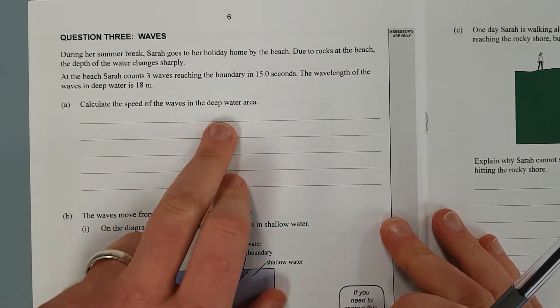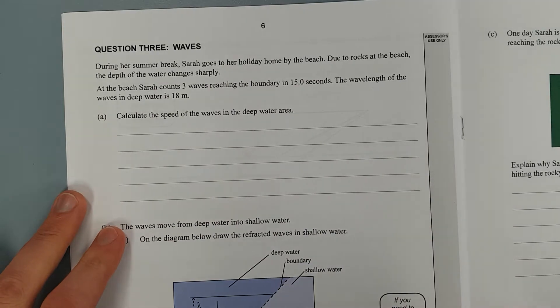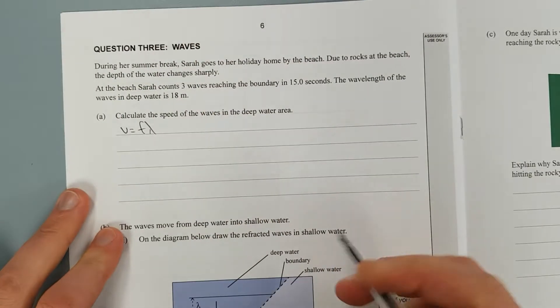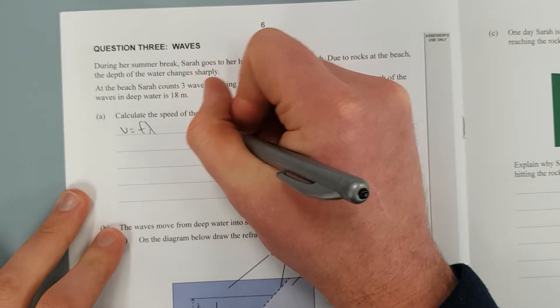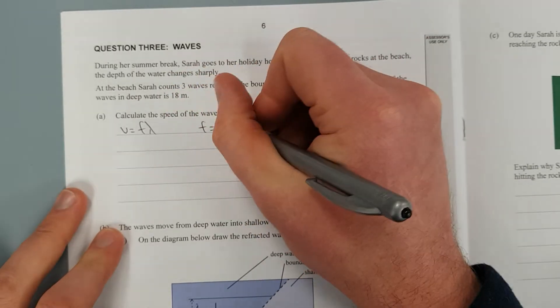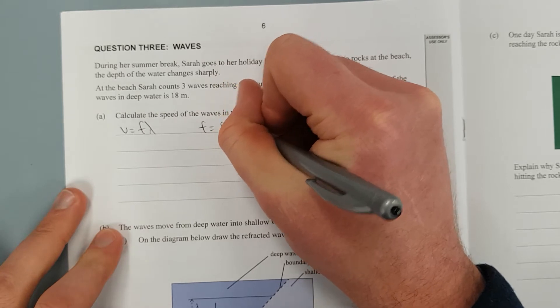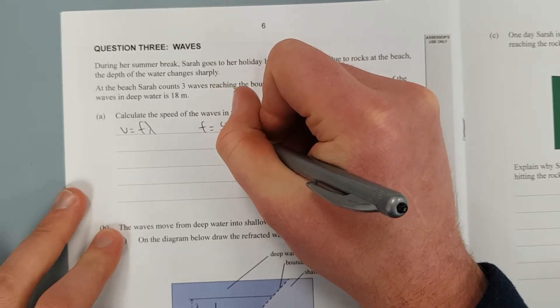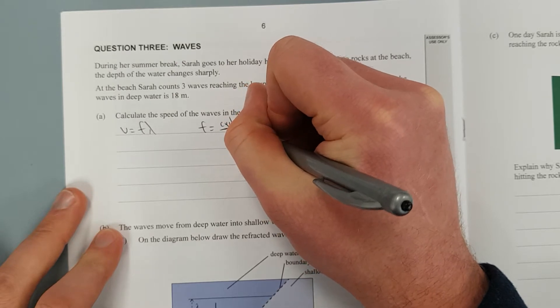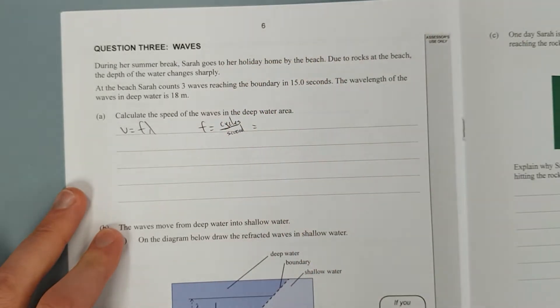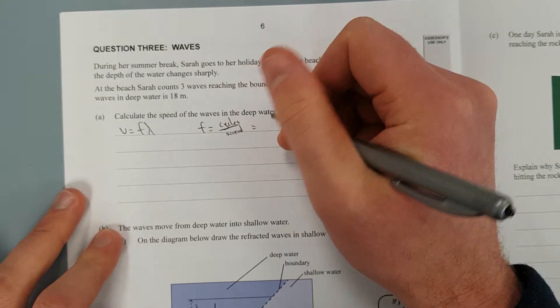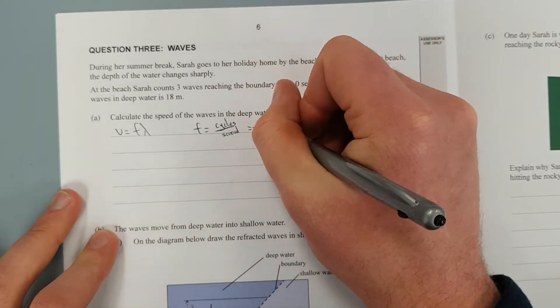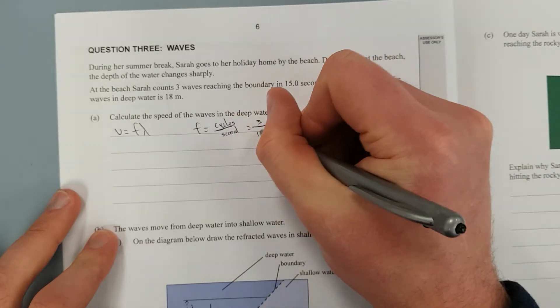Calculate the speed of the waves in deep water. This is a pretty simple application of V equals F lambda. The only tricky part is what is the frequency? The way to write frequency is the number of cycles or repetitions per second. So cycles per second, in other words, it's how many repetitions per time. So we've got three repetitions, three waves, three cycles, divided by the time, which is 15 seconds.